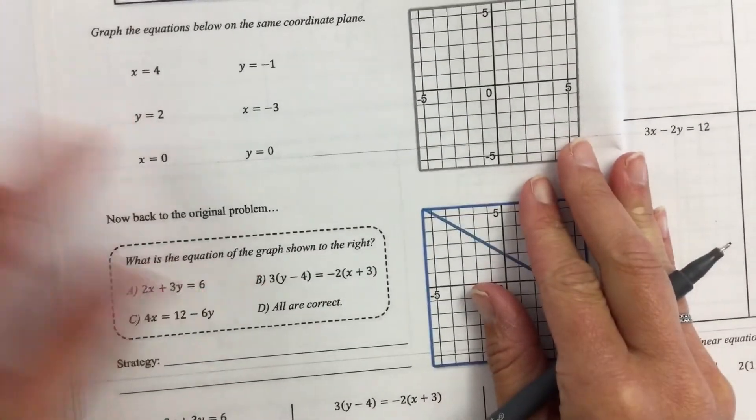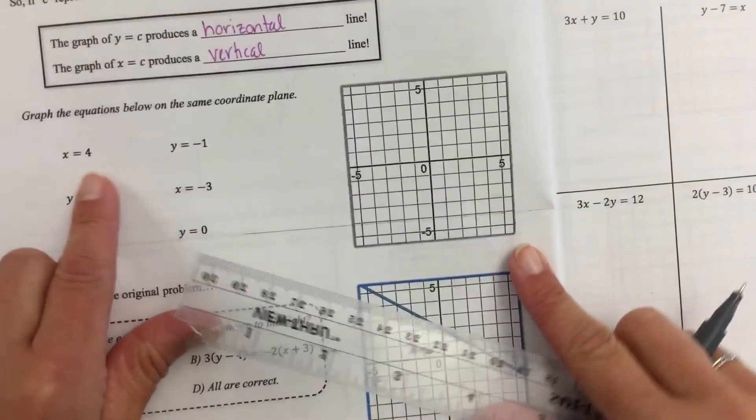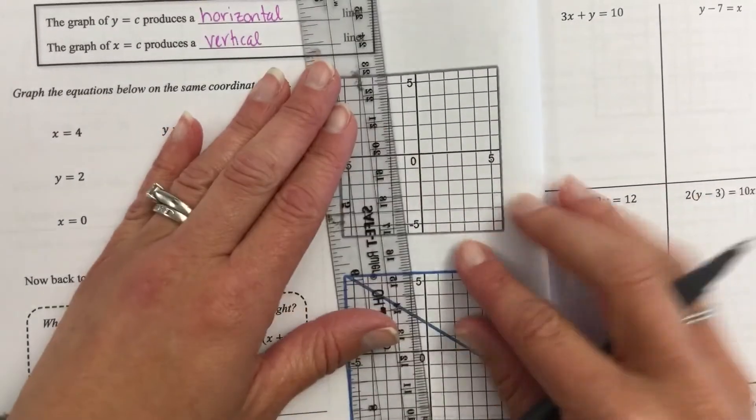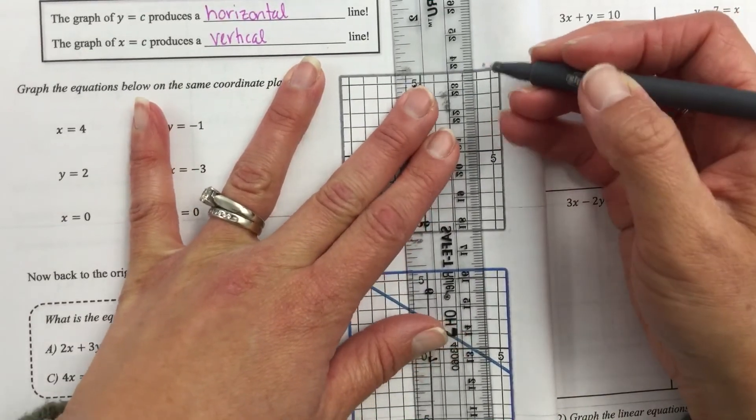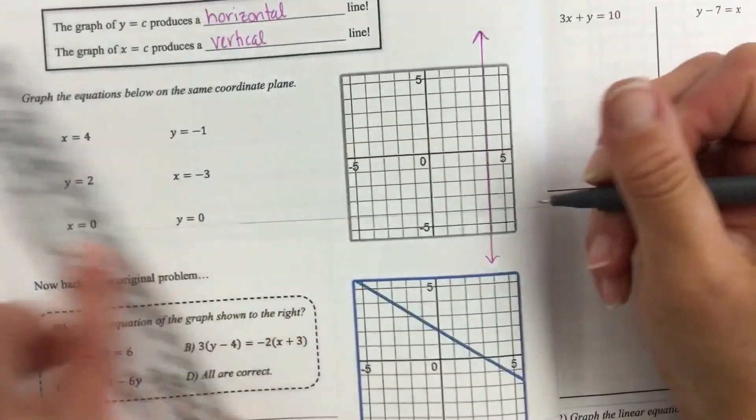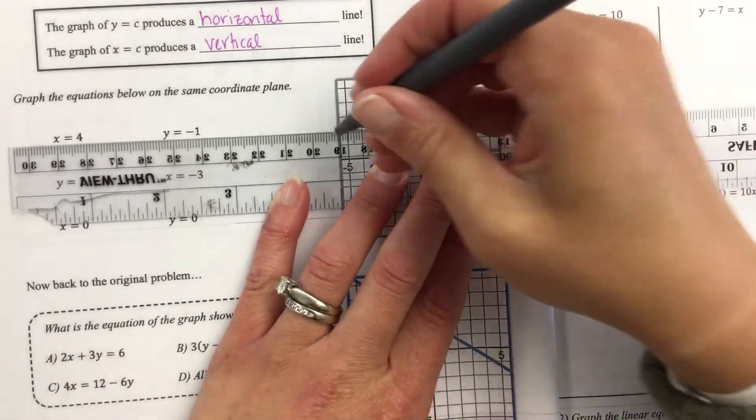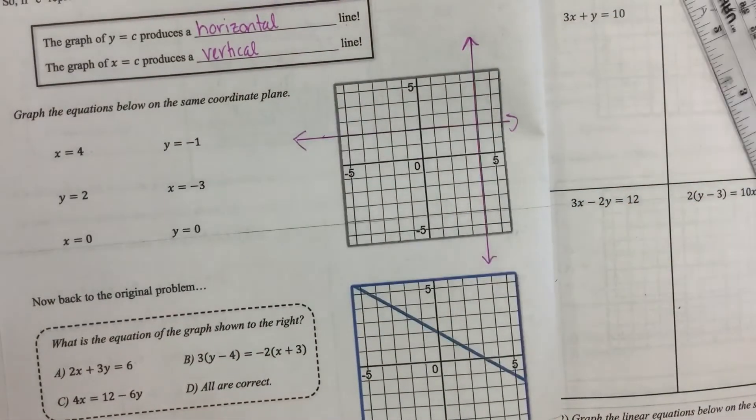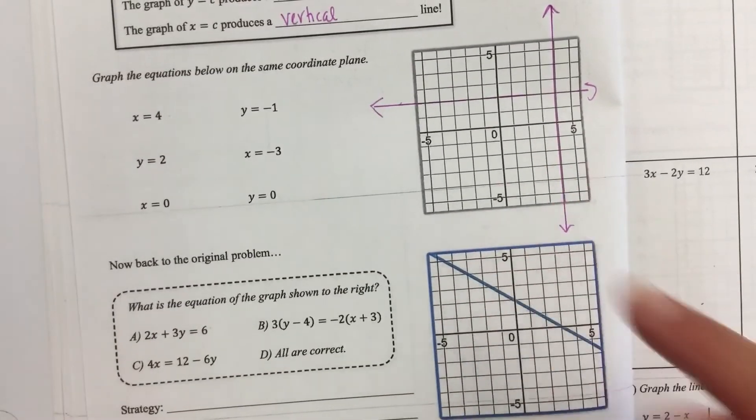So, graph the equations on the coordinate plane. So, you can just do x = 4. So, remember that x equals is a vertical. It means that every x is 4. So, 1, 2, 3, 4. And, that's right here. And, you can just simply go. That's your x = 4. y = 2. And, that one's going to go right here. Okay. And, then, they keep on going. I'm going to let you guys do the rest of those. And, we'll talk about those in class.